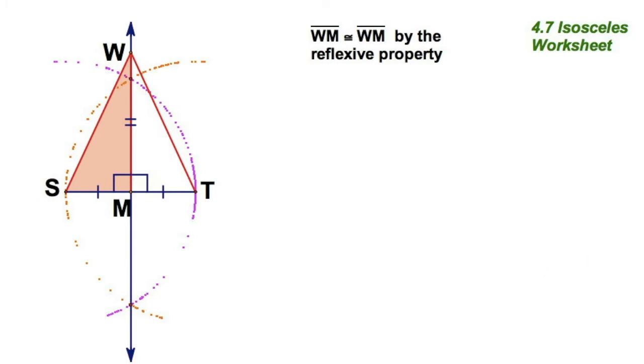And I've got a right triangle over here. And if I build this one, I can see it looks like a reflection. Because it is. This triangle is congruent to this triangle. Now, we know how to prove that. Because I could say triangle SWM congruent to triangle TWM.